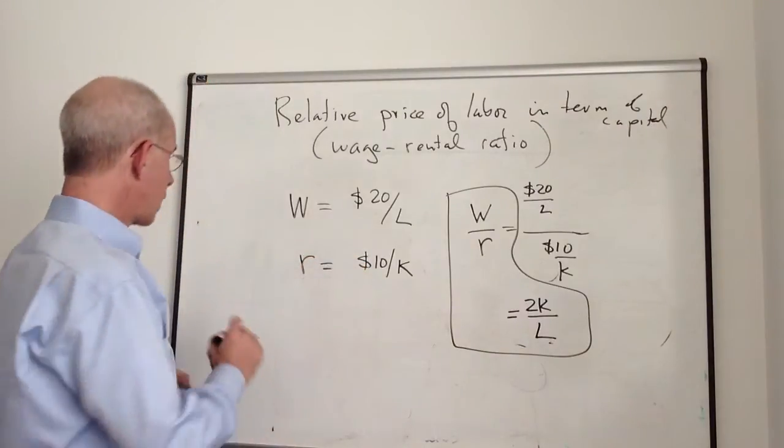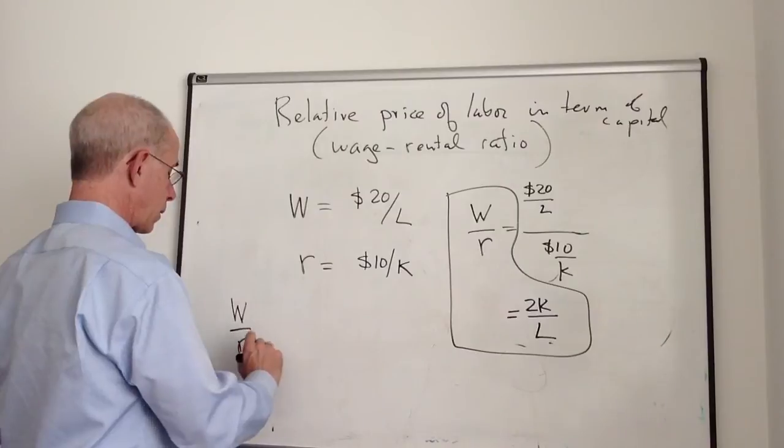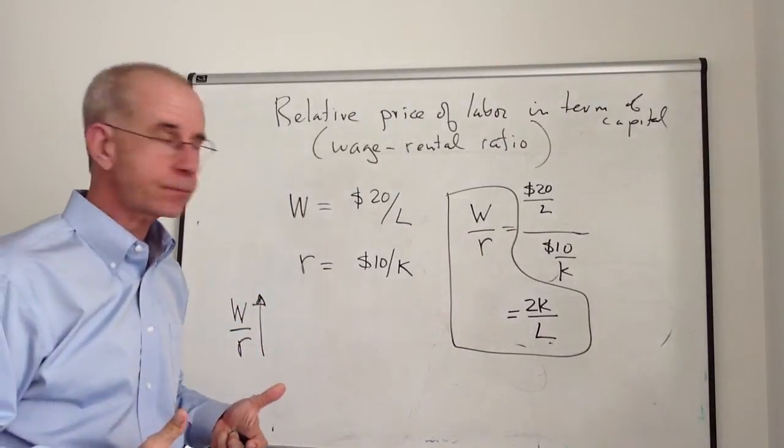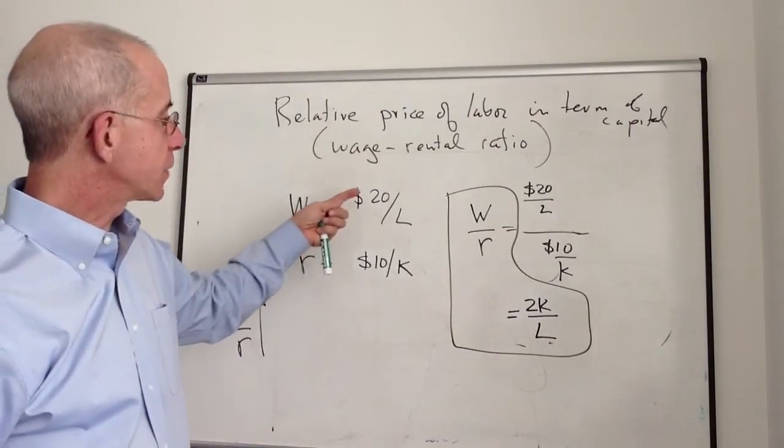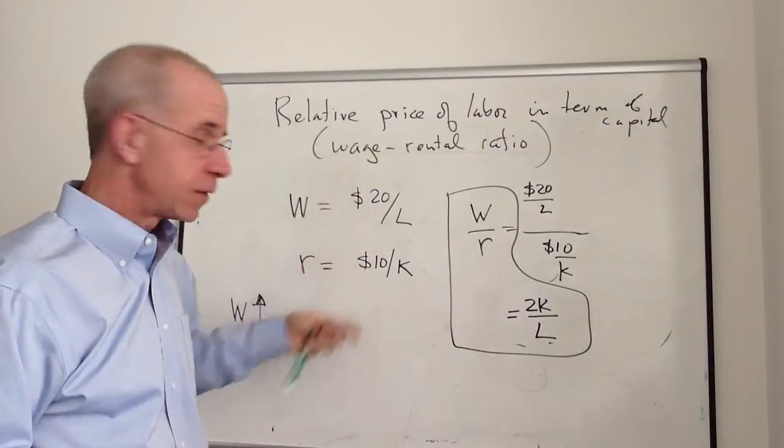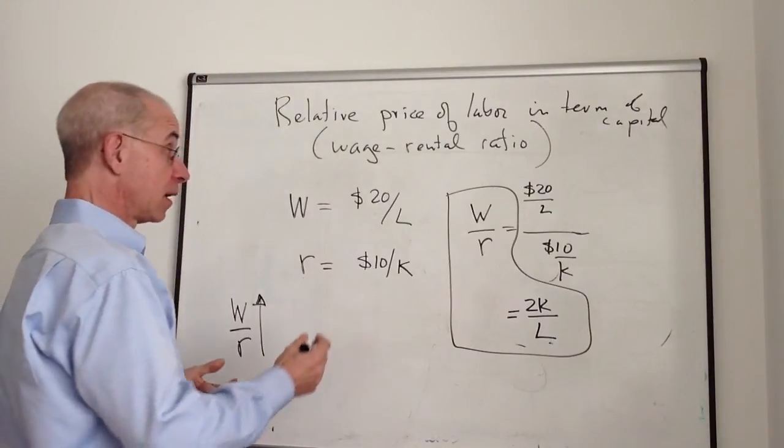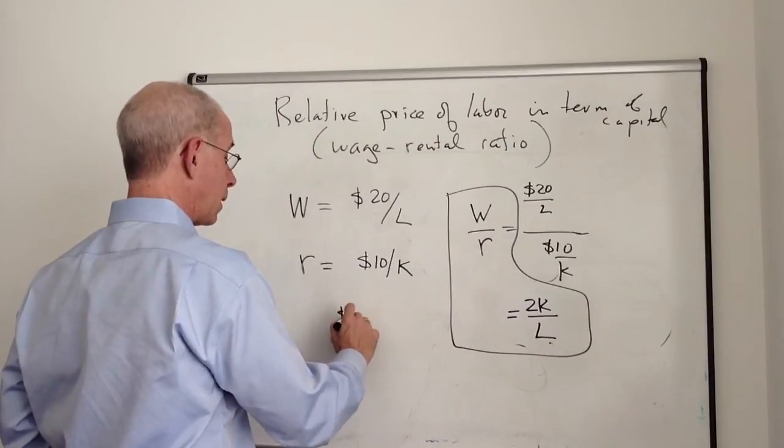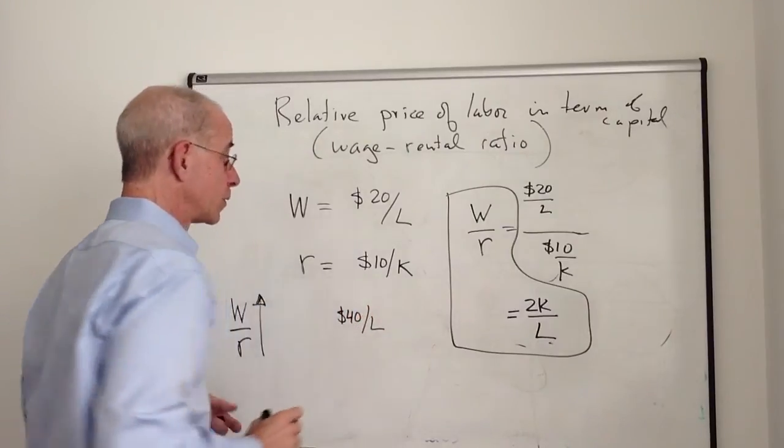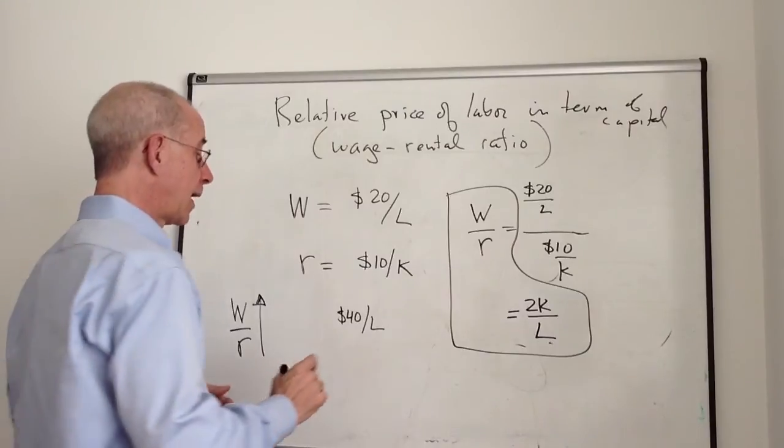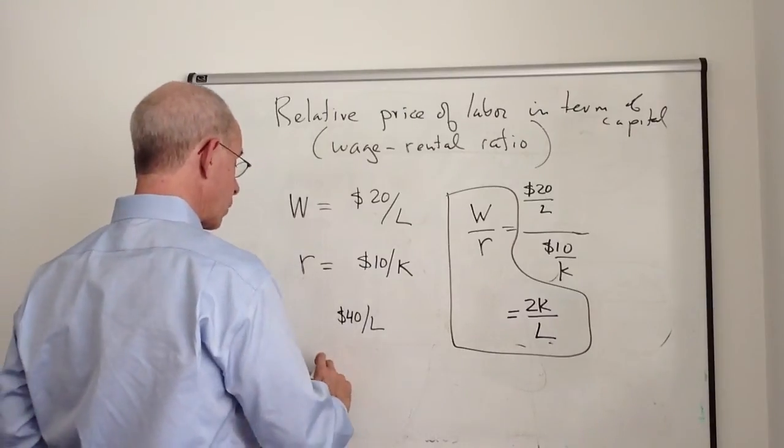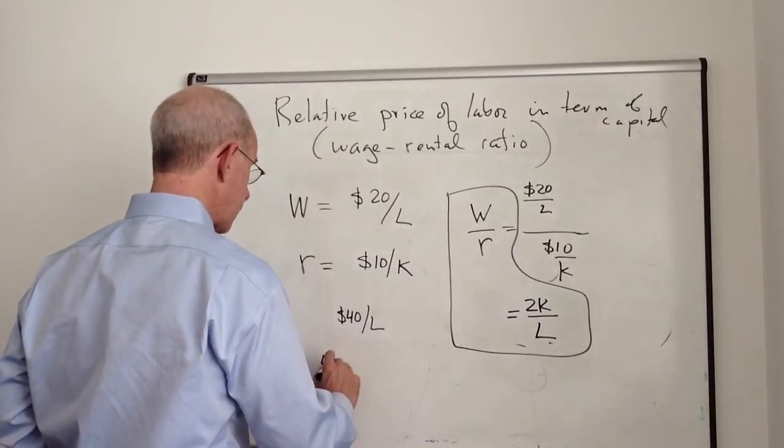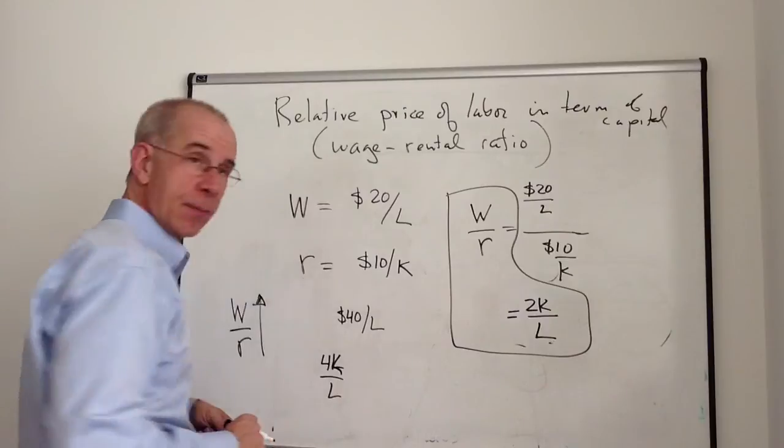So when we talk about the wage-rental ratio rising, for example, that's going to be when this price rises relative to that. So that could be because the wage went up, say it went to $40 per worker. What you would have in this instance is that the wage-rental ratio was four units of capital for every laborer.